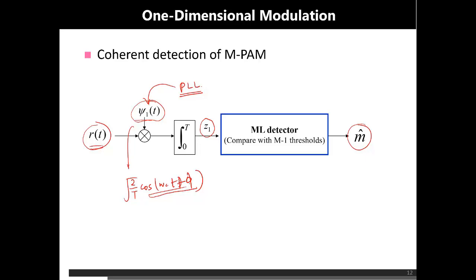That concludes the discussion of coherent detection of amplitude shift keying. In the next lectures, we will continue with bandpass modulation, discussing the coherent detection of phase shift keying, as well as frequency shift keying and their variants, followed by non-coherent detection.